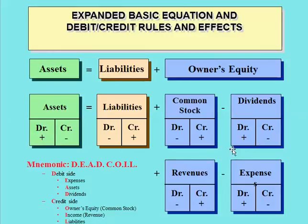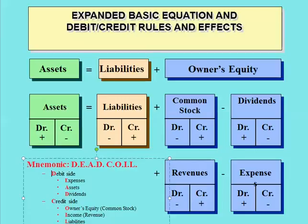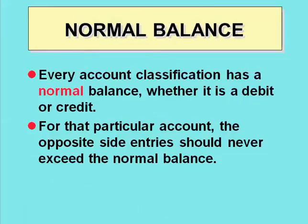When accountants handle a transaction, they do a little analysis, and with double-entry accounting, debits must equal credits. Here's a mnemonic: DEAD COIL. The debit side increases for Expenses, Assets, and Dividends. Credits increase for Owner's equity (common stock), Income or revenue accounts, and Liabilities. The increase side is what we call the normal balance. So assets always carry a debit normal balance — for example, it would be very hard to have a credit balance in equipment. You may want to print this slide out and keep it handy.